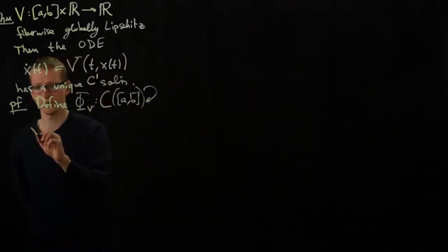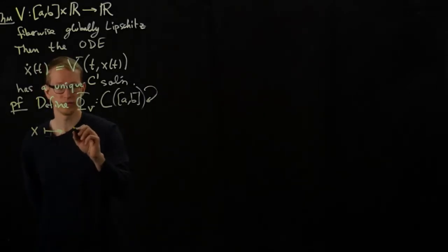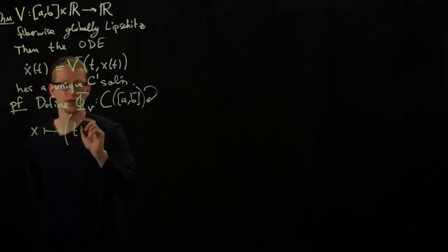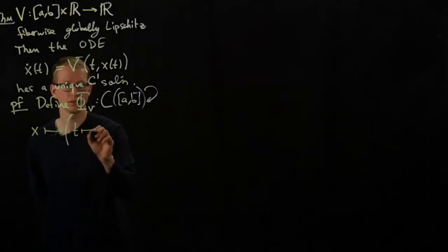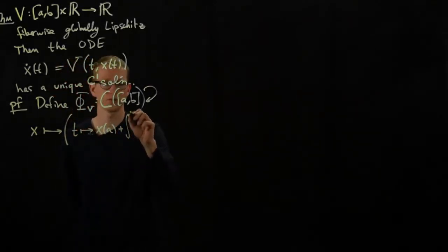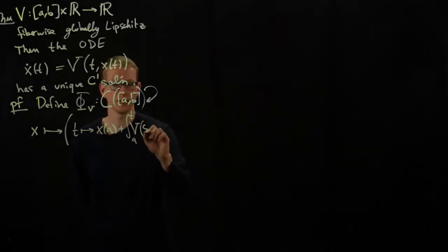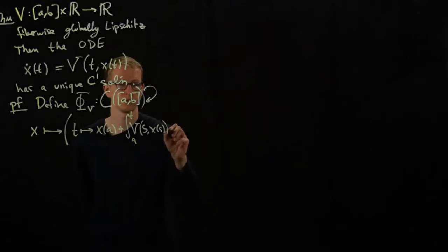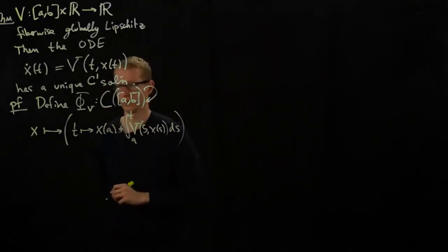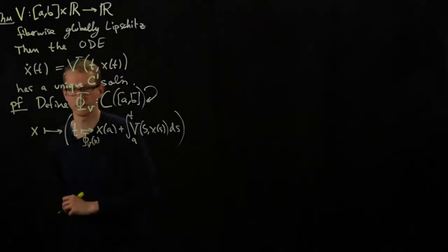So it takes a function x and it maps it to the function whose value at t is given by x of a plus the integral from a to t, v of s, x of s, and integrate that function. So this is the function phi v at x.